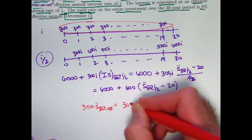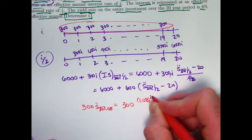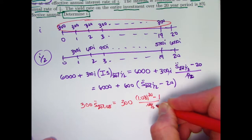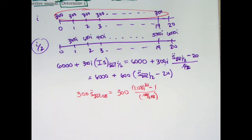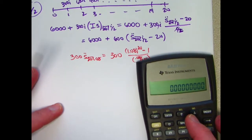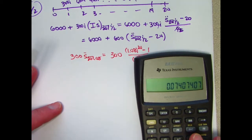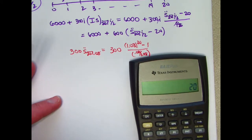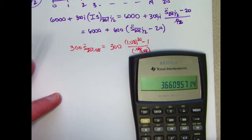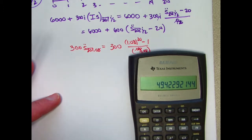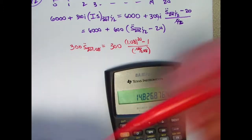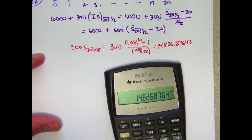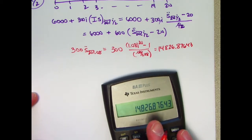And we can find out what this is. This is going to be 300 times 1.08 to the 20th power minus 1 over d, the discount rate for this 8% rate, but that's the same as 0.08 divided by 1.08. So let's go ahead and see what this is. 0.08 divided by 1.08. The discount rate is about 7.4%. I'll store that in register 0. 1.08 to the 20th power is this. Subtract 1, divide by what's in register 0, and now multiply by 300. 14,826.88, or if you prefer, 8,7,6,4,3 to carry more decimal places, is what the future value is, based on this 8% annual yield rate.